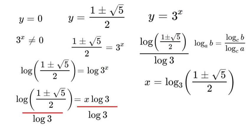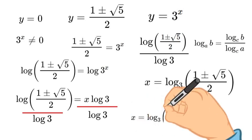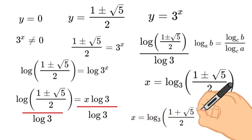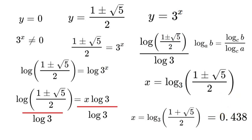Therefore, since that wouldn't work, the final answer has to be the 1 plus square root of 5. Which means our final answer would be x equals log_3 of (1 plus square root of 5 over 2). And if you were to plug that into your calculator, you would get 0.438.